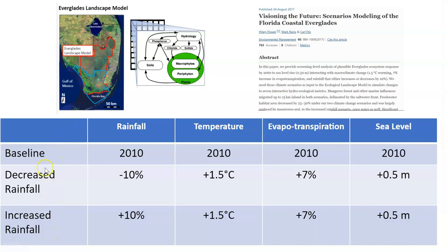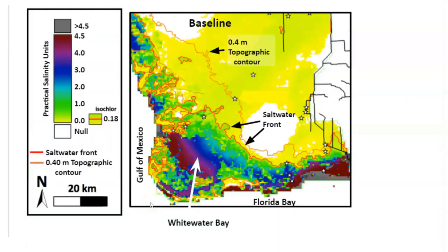We simulated ecological outcomes for three scenarios: a baseline of 2010 conditions, and two climate change scenarios from OB, both of which included a degree and a half of warming, an increase in evapotranspiration, and half a meter of sea level rise. The only difference between these two scenarios is whether rainfall increased or decreased by 10%. Looking at the salinity profile, the baseline scenario with 2010 conditions closely matches the current condition of the Everglades.